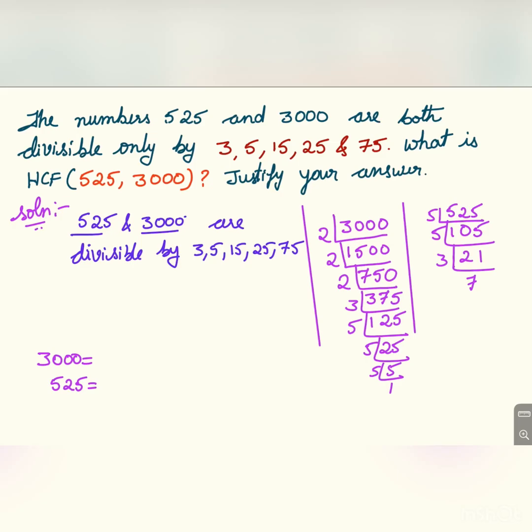Namaste everybody, welcome to my channel. The numbers 525 and 3000 are divisible by 3, 5, 15, 25, and 75. What is the HCF of 525 and 3000? Justify your answer.